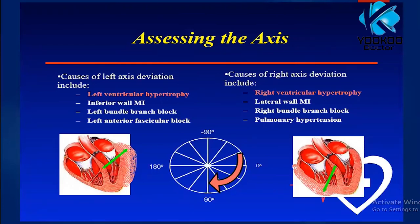Conditions causing left axis deviation include left ventricular hypertrophy, inferior wall myocardial infarction, left bundle branch block, and left anterior fascicular block. Right axis deviation is caused by right ventricular hypertrophy, lateral wall myocardial infarction, right bundle branch block, and pulmonary hypertension. Note that left axis deviation in the elderly can also be a normal variant.